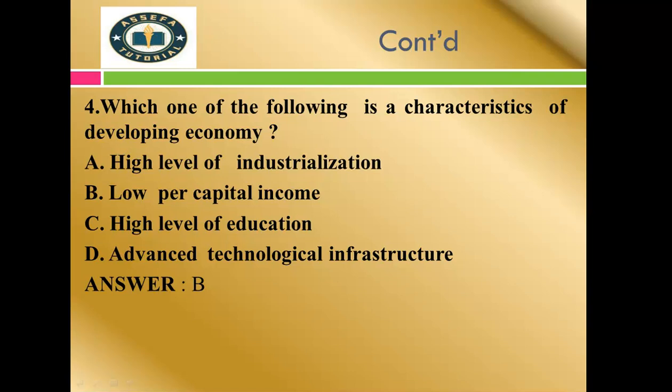Question number four: Which one of the following is a characteristic of developing countries? High level of industrialization is false — developing countries have low level of industrialization. Low per capita income — of course, developing countries have low per capita income. High level of education — no, there is low level of education. Advanced technological infrastructure — no, developing countries have poor technological infrastructure. Therefore the correct answer is B, low per capita income.